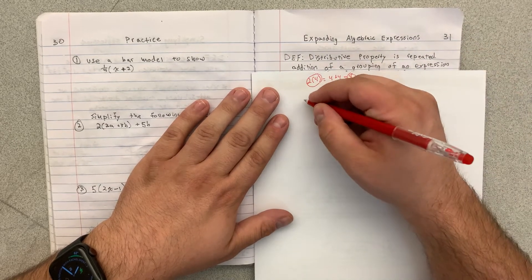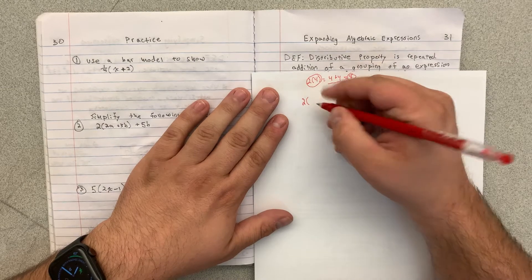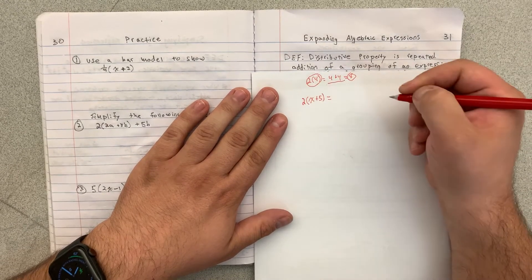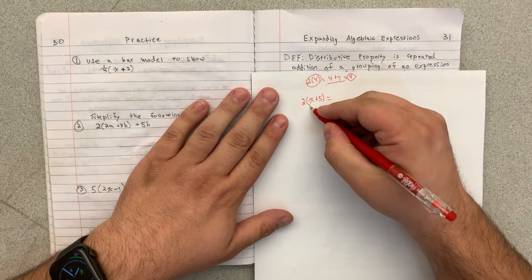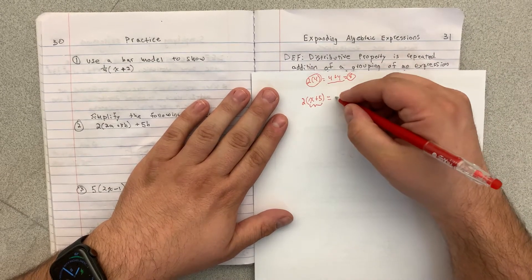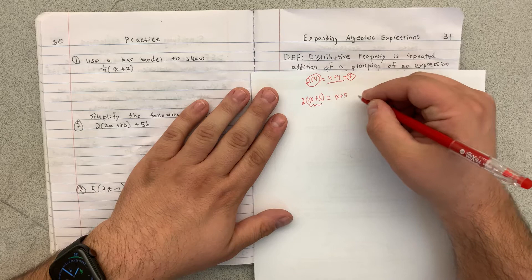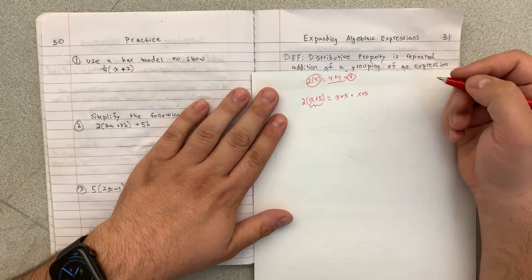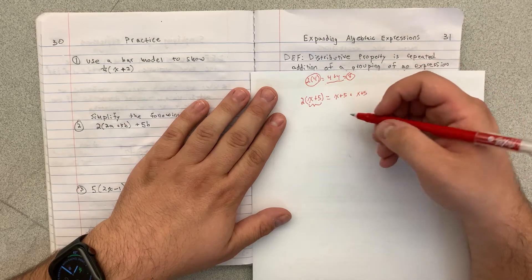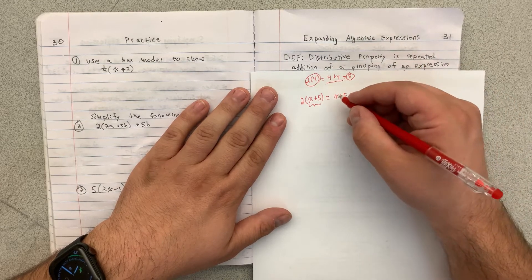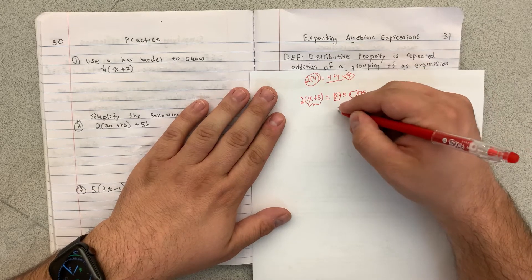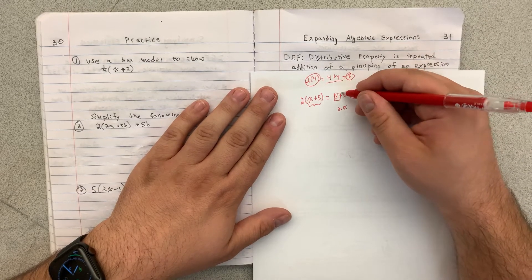The distributive property works in a similar way. If you have 2 times x plus 5, that means you're adding x plus 5 twice. So x plus 5 and x plus 5. And when you combine like terms like you did in the last lesson, you get 2x plus 10.